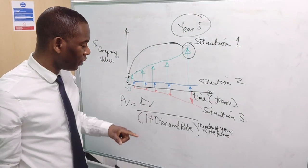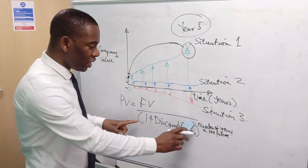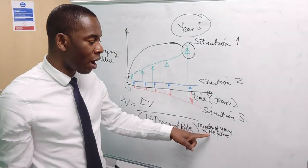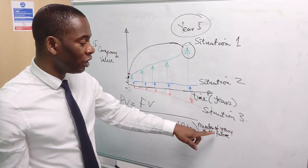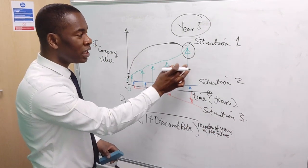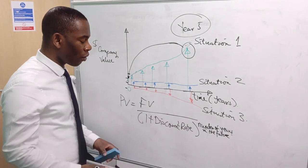You have a discount rate - add one to the rate, then raise it to the power of the number of years you are looking into the future. So let's assume we are looking at discounting year 5. We will now say the future value of year 5, all divided by one...